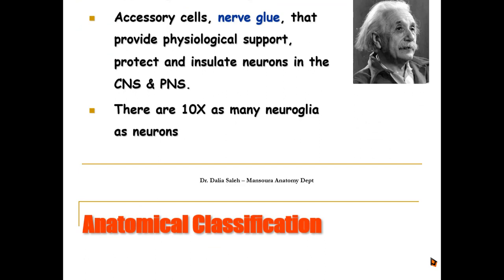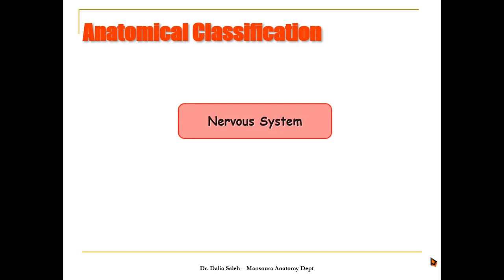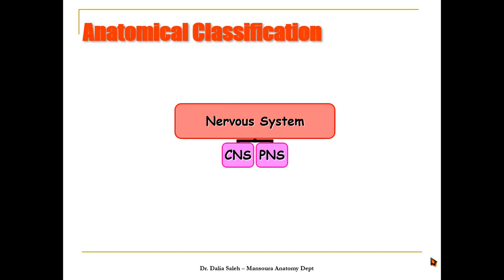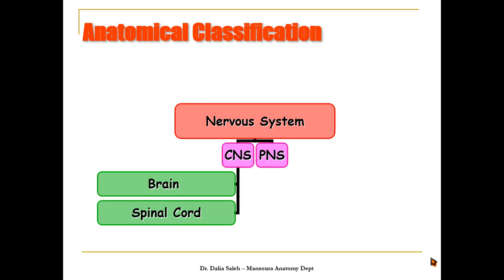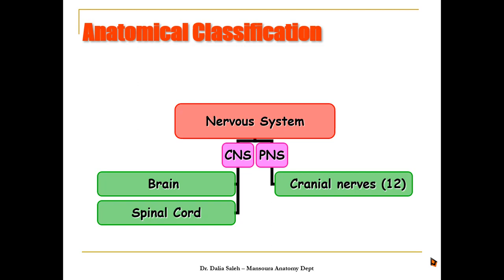For the anatomical classification of the nervous system, we divide it into the central nervous system and the peripheral nervous system. The central nervous system lies inside the axial skeleton — inside the skull we have the brain, and inside the vertebral column we have the spinal cord. The peripheral nervous system is formed of nerves that come out of the brain as the cranial nerves — there are 12 pairs — and the nerves that come out of the spinal cord — there are 31 pairs.